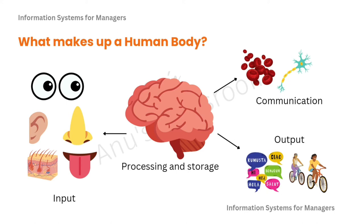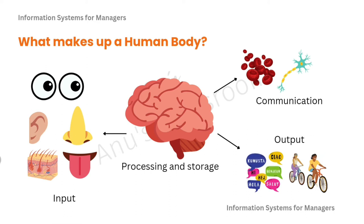The way these inputs get communicated to our brain — the processing and storage unit — is through nerves and blood cells. Once processing is completed, if there is anything to be given out as output, we do that: if it is speech we speak, if it is an action we act. That is what makes up a human body. Humans have always been fascinated by gods and loved to play god, so when a computer was made, the idea was to mimic what happens in the human body.